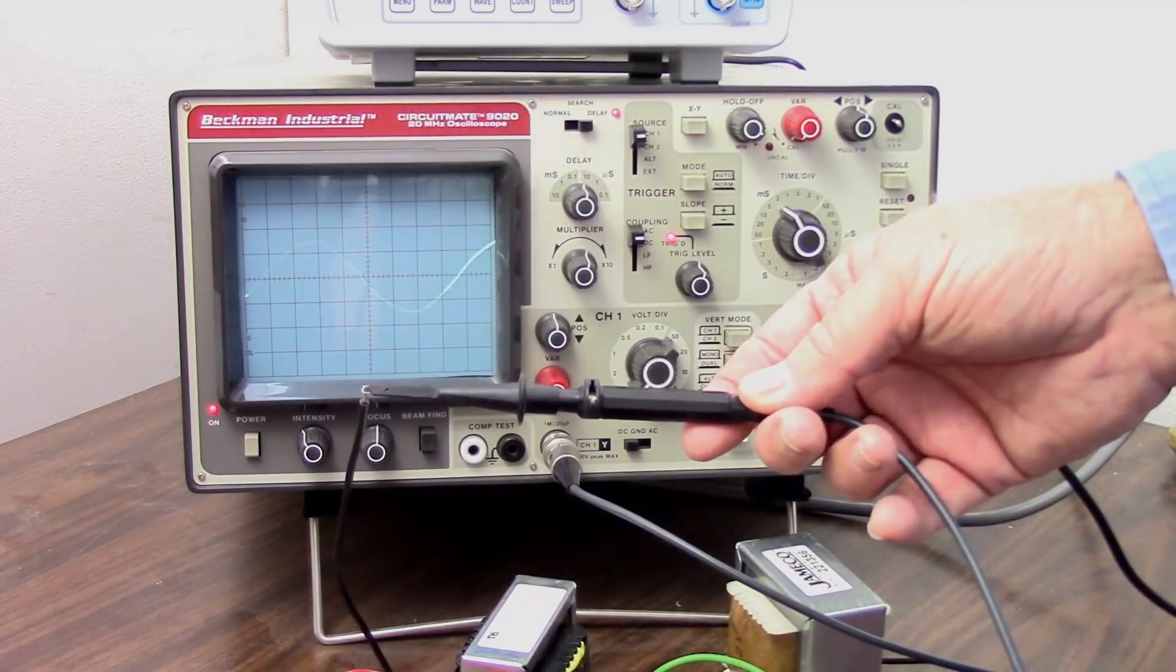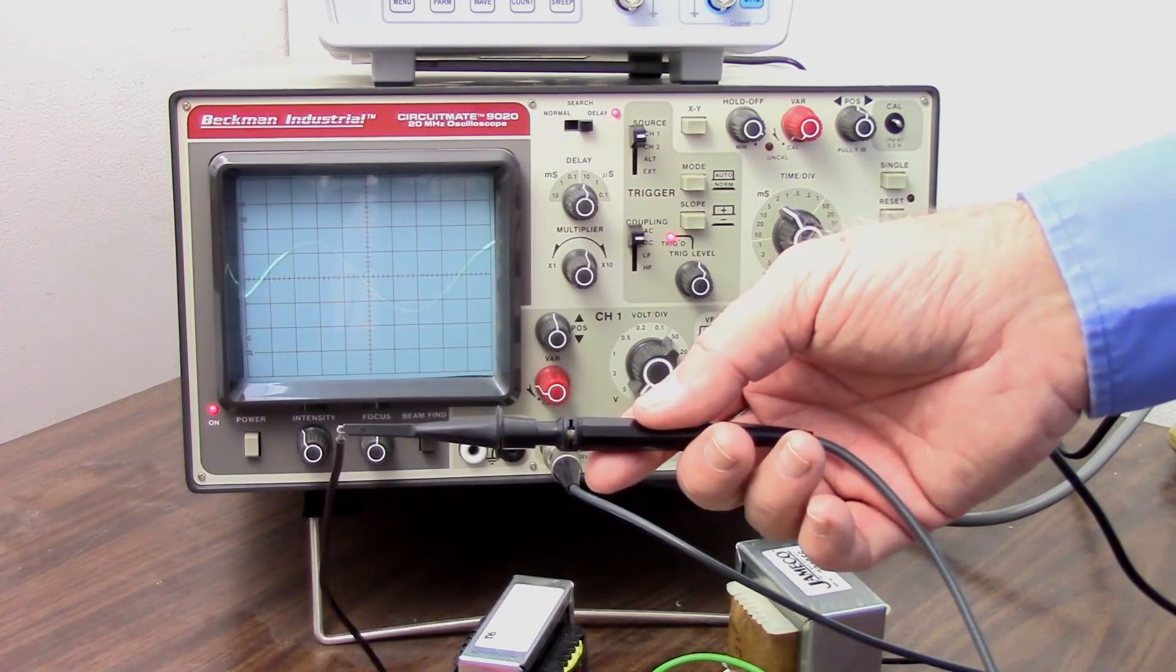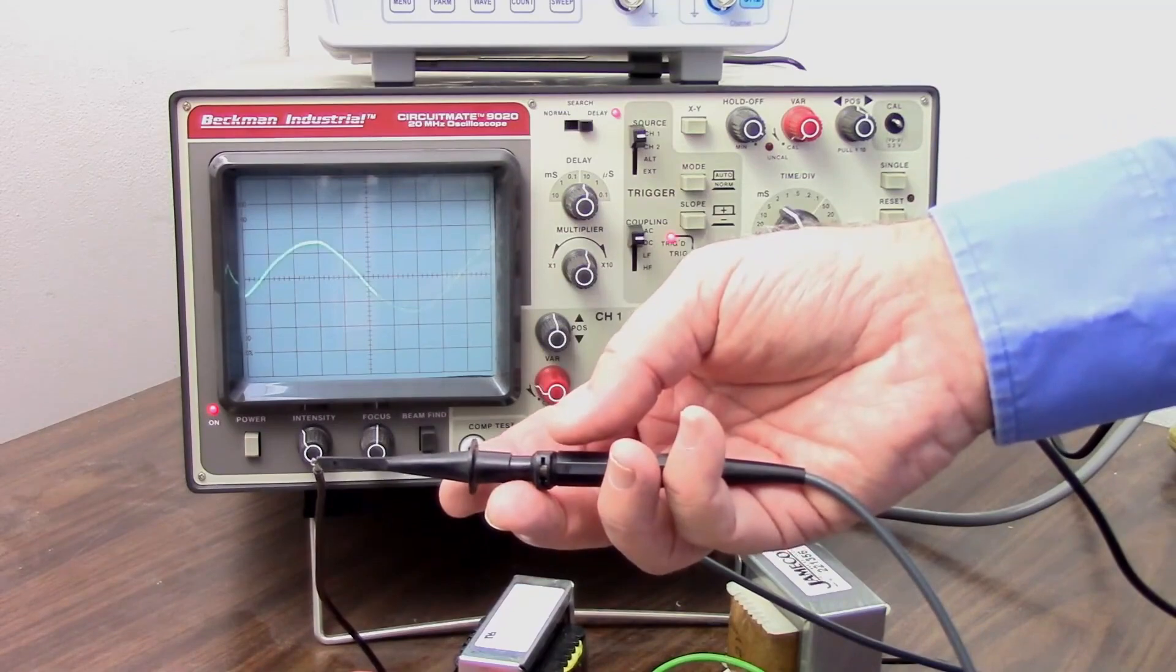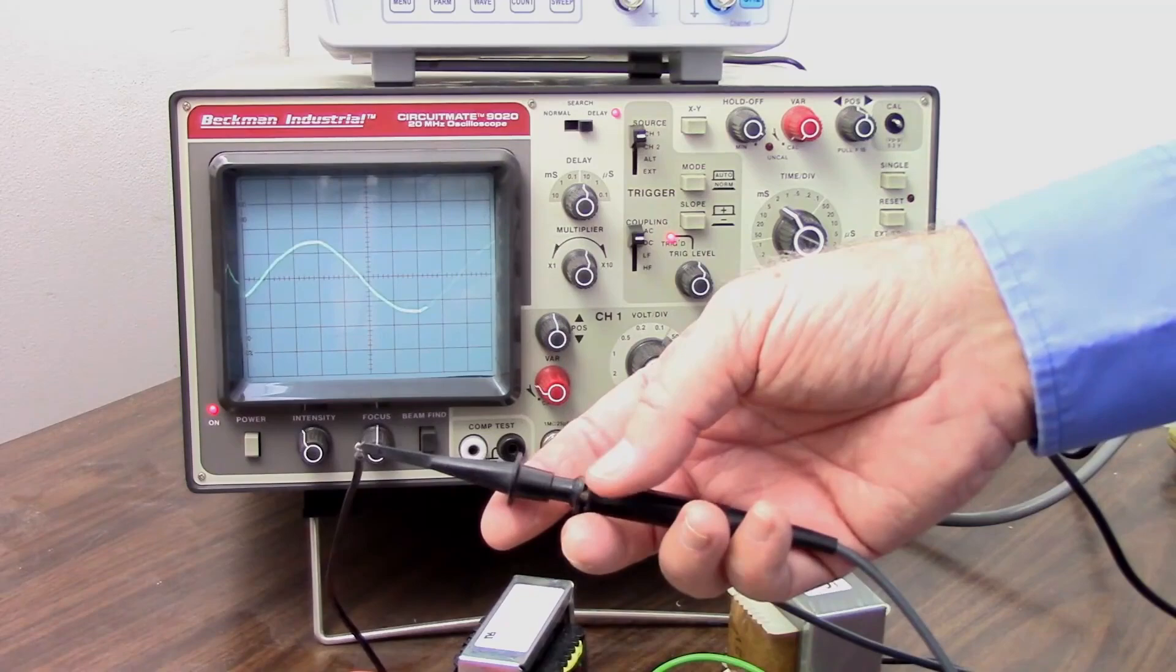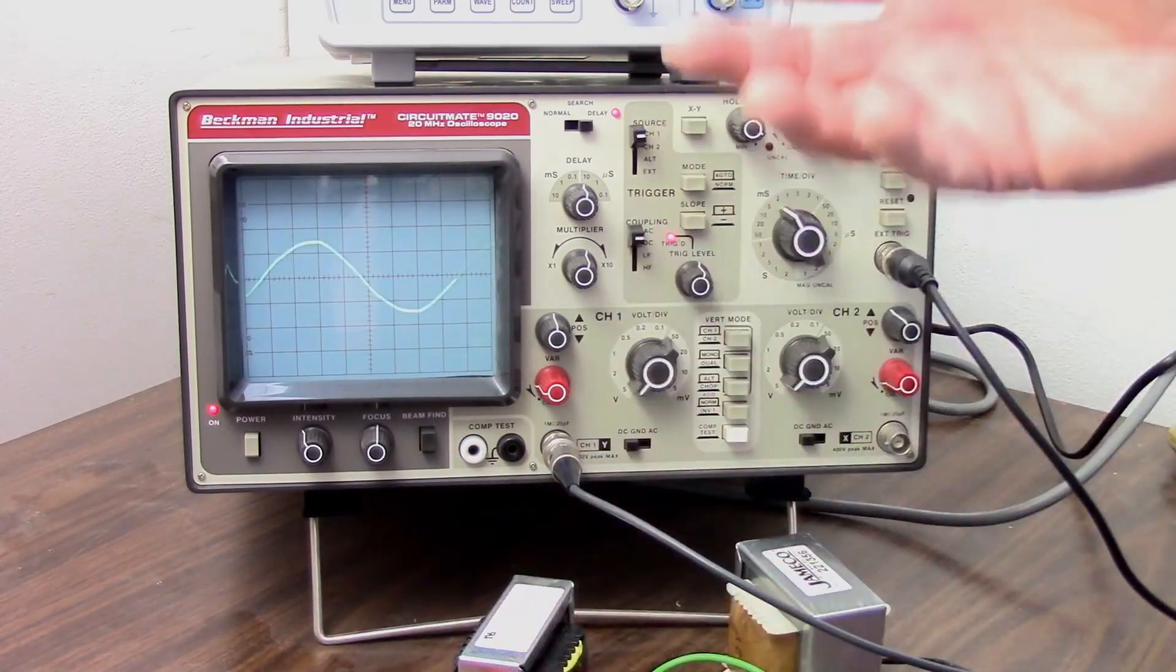So that's one purpose of a times ten probe. That is when you need to measure a voltage that is too high for the oscilloscope to display. Another thing the times ten probe does is it increases the input impedance of the oscilloscope by a factor of 10. Oscilloscopes have a relatively low input impedance, compared to regular voltmeters, and they tend to load down your circuit.